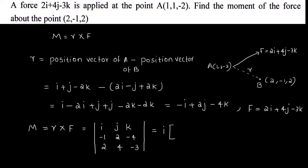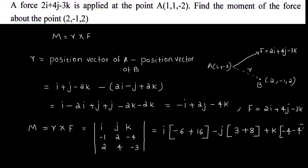Expanding the determinant: i component is (2×(-3) minus 4×(-4)) = (-6 + 16) = 10. The j component is minus ((-1)×(-3) minus (-4)×2) = minus(3 + 8) = -11. The k component is ((-1)×4 minus 2×2) = (-4 - 4) = -8. Therefore, the moment of force M equals 10i minus 11j minus 8k.